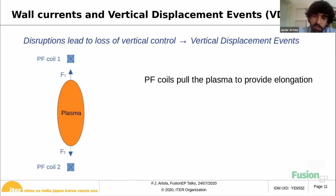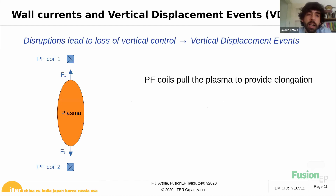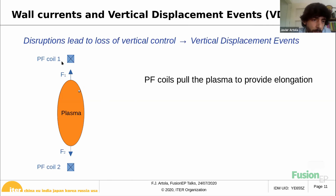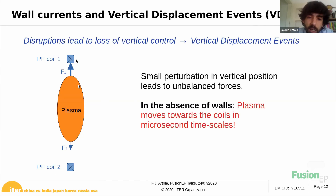Whenever you have a disruption, you normally lose the vertical control of the plasma. Whenever you lose vertical control, you get a vertical displacement event or VDE. The main reason is that if you want a plasma with an elongation — as most modern tokamaks operate with large elongation — you need PF coils which pull the plasma towards them. If the plasma moves just a small perturbation in vertical position, it gets closer to one coil and there is an imbalance of forces.